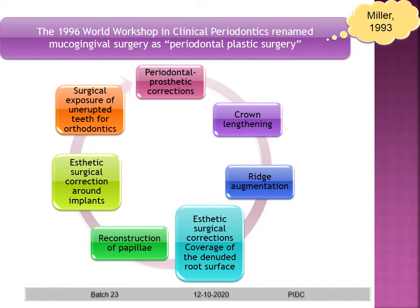The 1996 World Workshop in Clinical Periodontics renamed Mucogingival Surgery as Periodontal Plastic Surgery, a term put forward by Miller. This includes periodontal prosthetic corrections, crown lengthening, ridge augmentation, aesthetic correction of coverage of a denuded root surface, reconstruction of papilla, aesthetic surgical correction around implants, and surgical exposure of unerupted teeth for orthodontics.